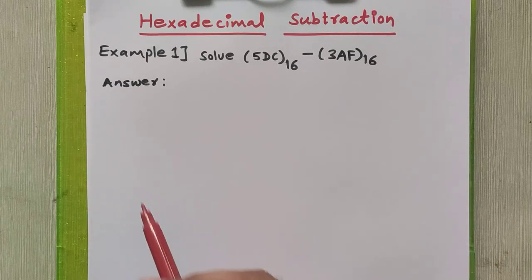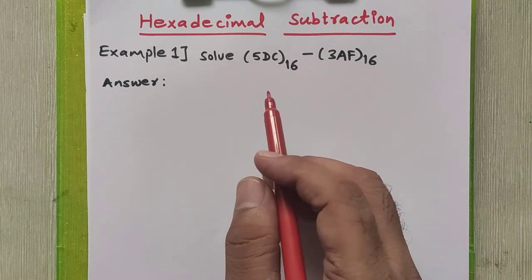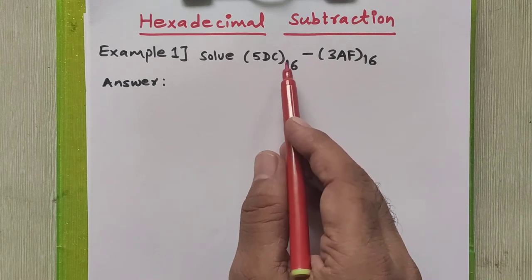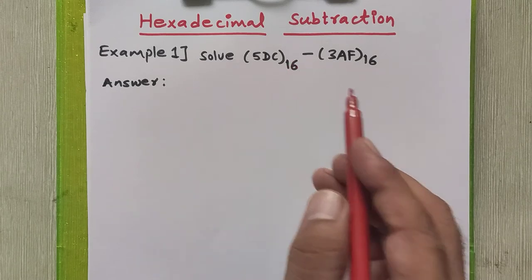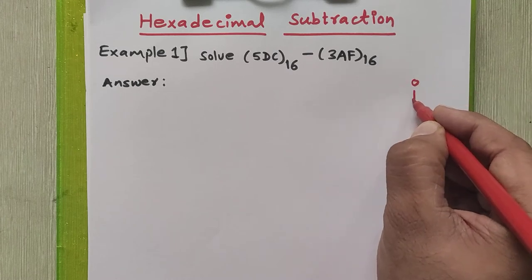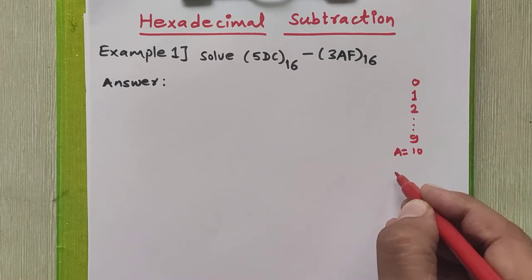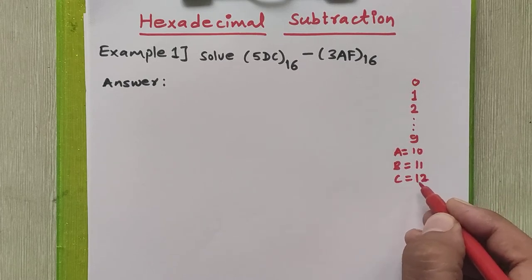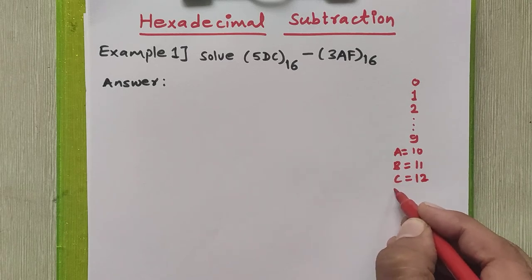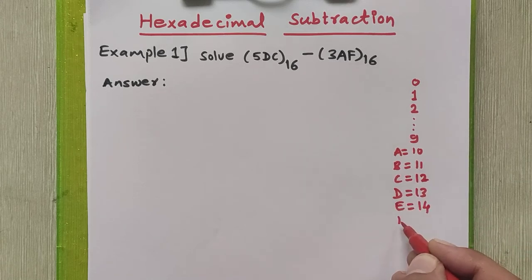Hello friends, in this tutorial we are going to study how to perform the subtraction of two hexadecimal numbers directly without converting to any other base. As we know, the base of this number system is 16. The valid digits for hexadecimal are 0 to 15: digits 0 to 9, then 10 is represented by A, 11 by B, 12 by C, 13 by D, 14 by E, and 15 by F.